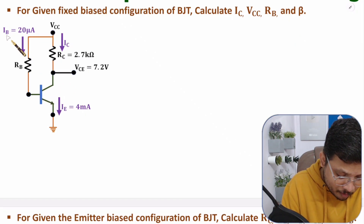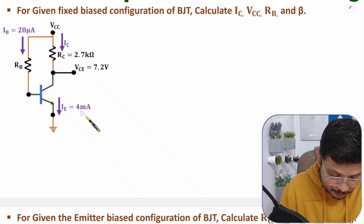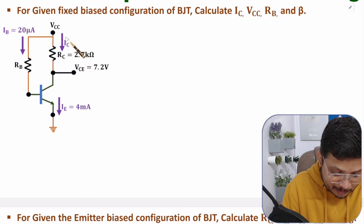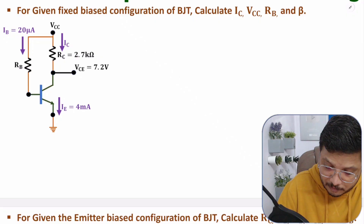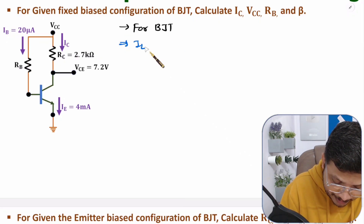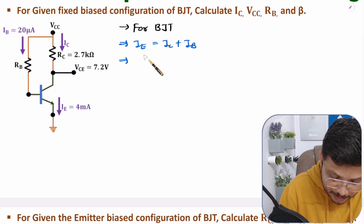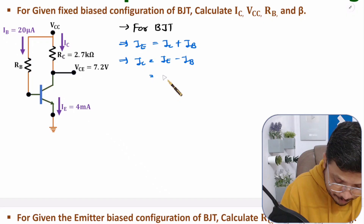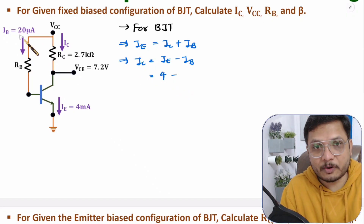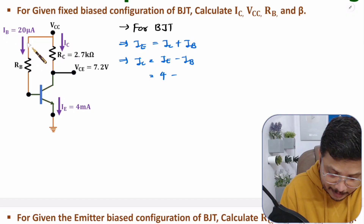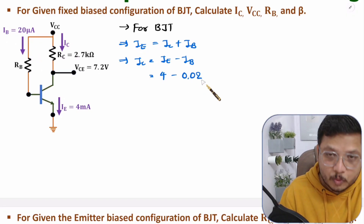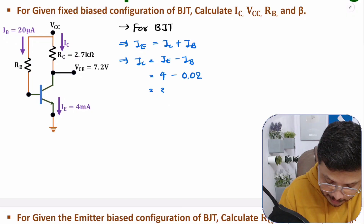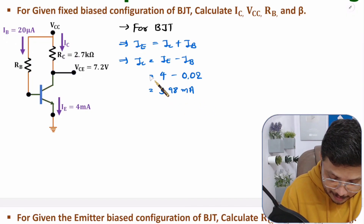With this circuit, we have base current and emitter current. So from base current and emitter current, one can calculate collector current IC. One should know that for BJT, emitter current equals collector current plus base current. So collector current is the unknown quantity — that will be emitter current minus base current. Here emitter current is 4 milliampere and base current is 20 microampere, which in terms of milli is 0.02. So the difference gives us 3.98 milliampere collector current.